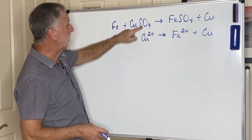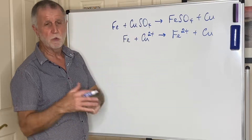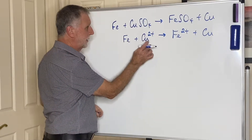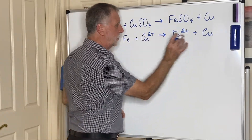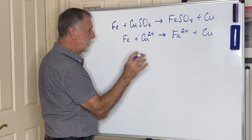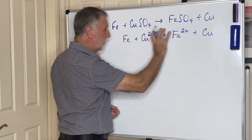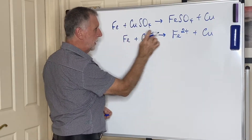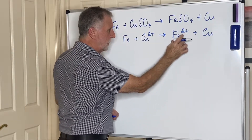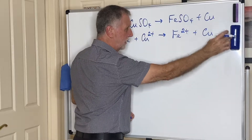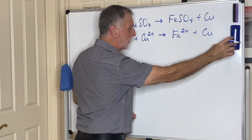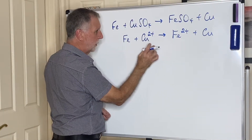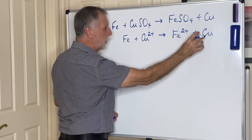That could have been copper chloride, copper nitrate — copper anything. It's the copper ion that's actually doing something. We then turn that into two half equations: Fe became Fe2+ giving up two electrons, and Cu2+ gained those two electrons to become copper.